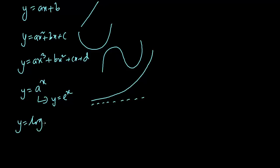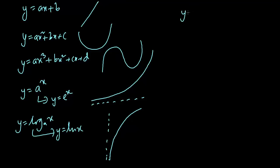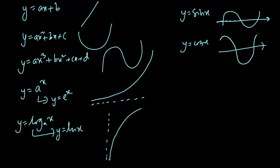Then we have y equals log base a of x, but more specifically with base e we write it as ln x — generally it has a vertical asymptote and a characteristic shape. We also have y equals sin x, which oscillates with this wave shape along the x-axis. Then y equals cos x, which has a similar sinusoidal shape. These are all general shapes worth memorizing. If we know the specific values of a and b, we can get the specific pictures.